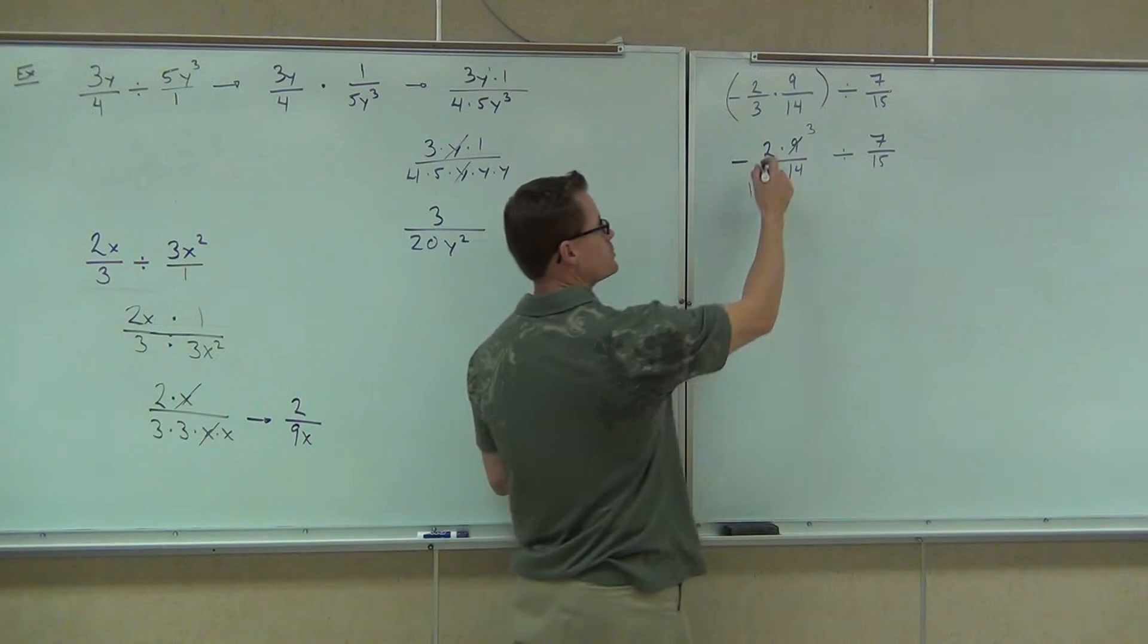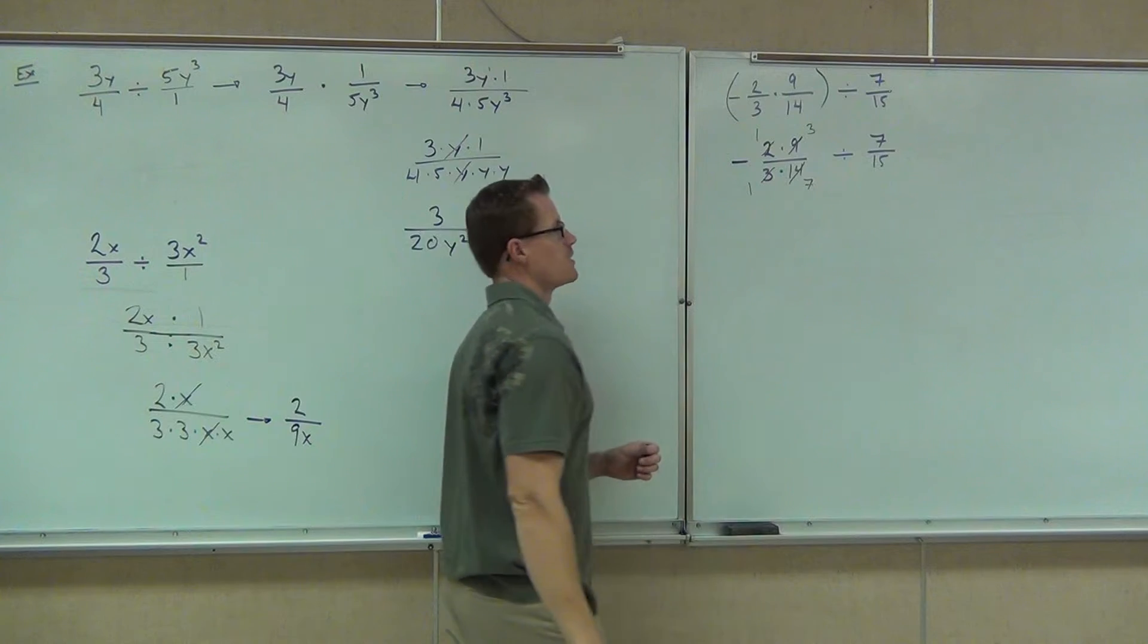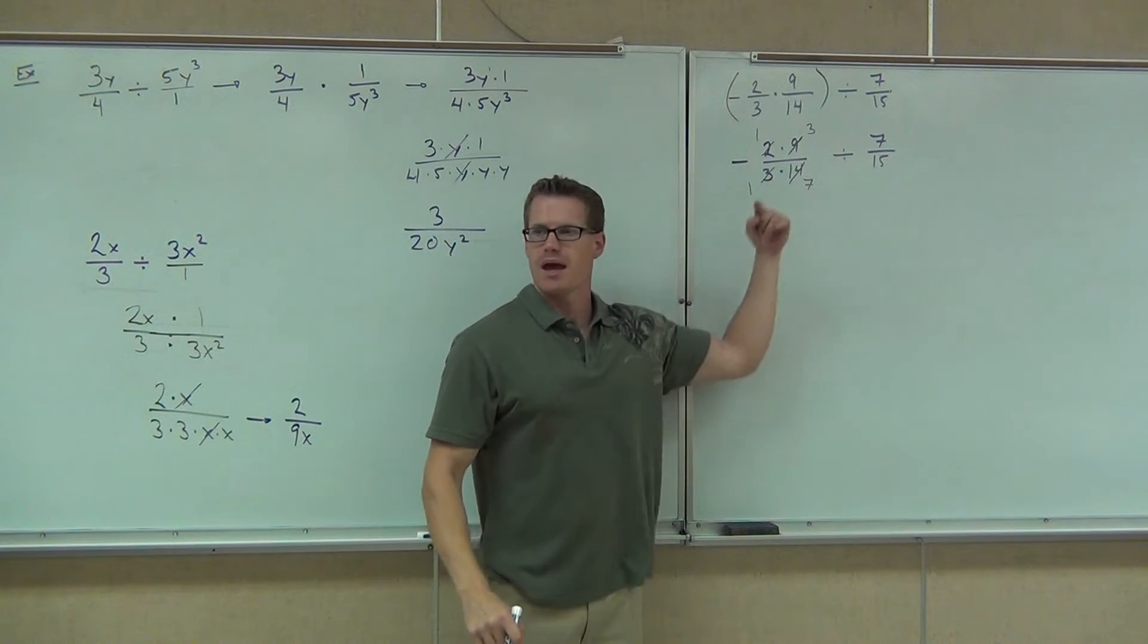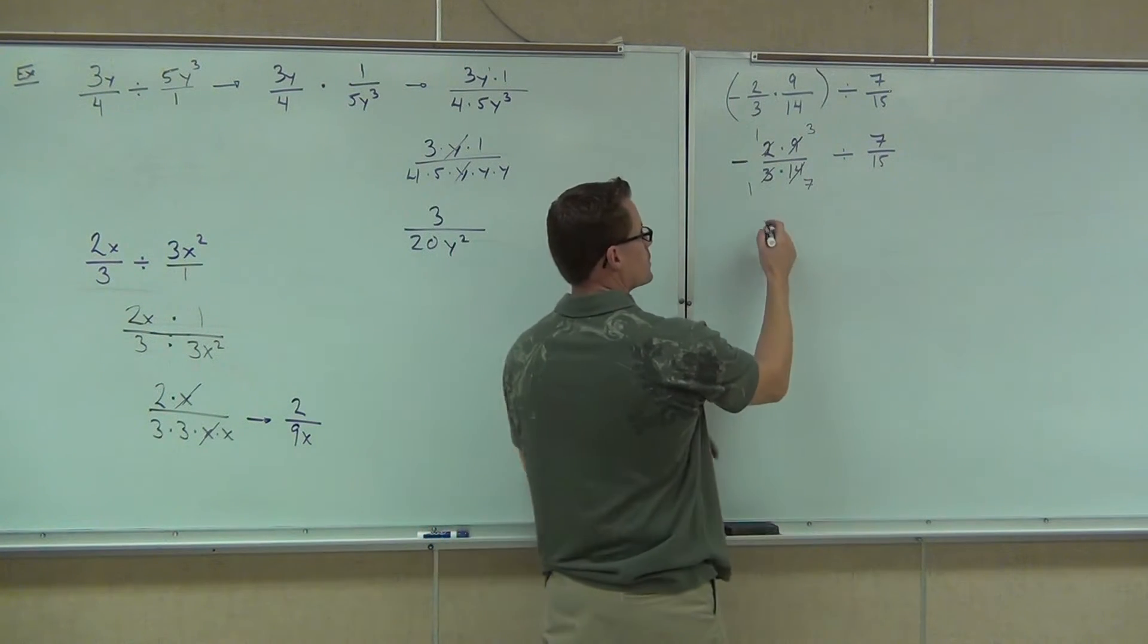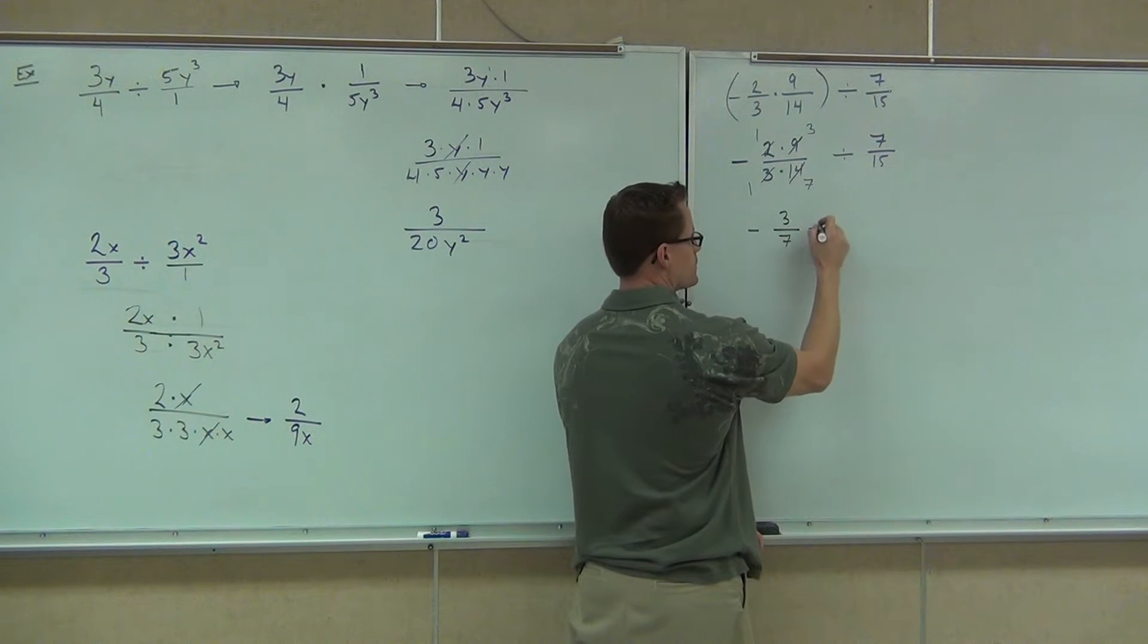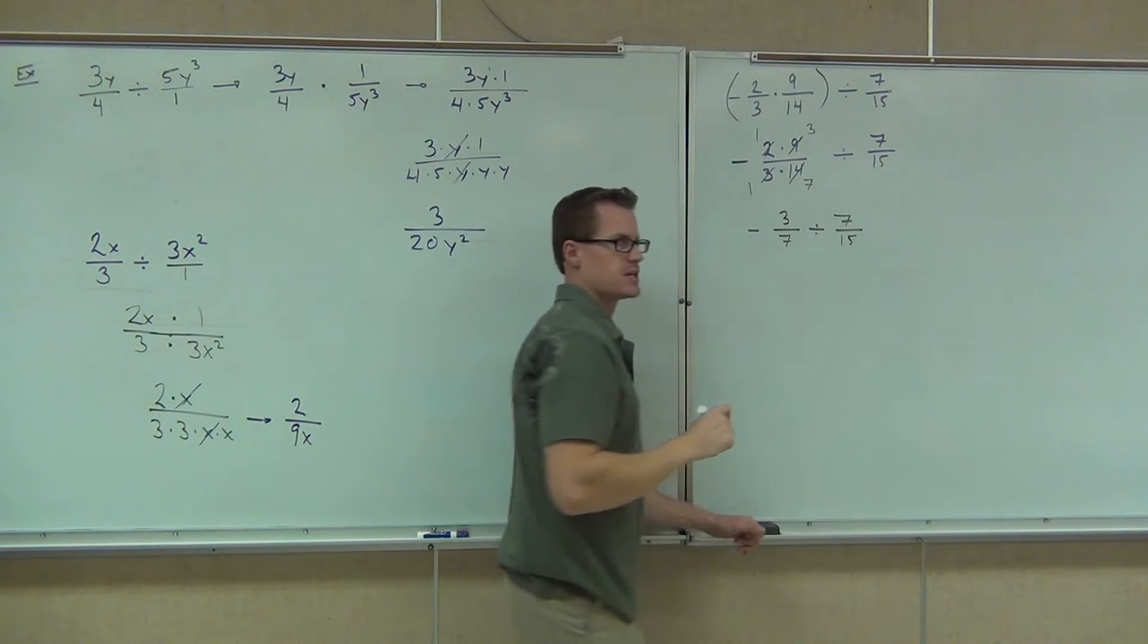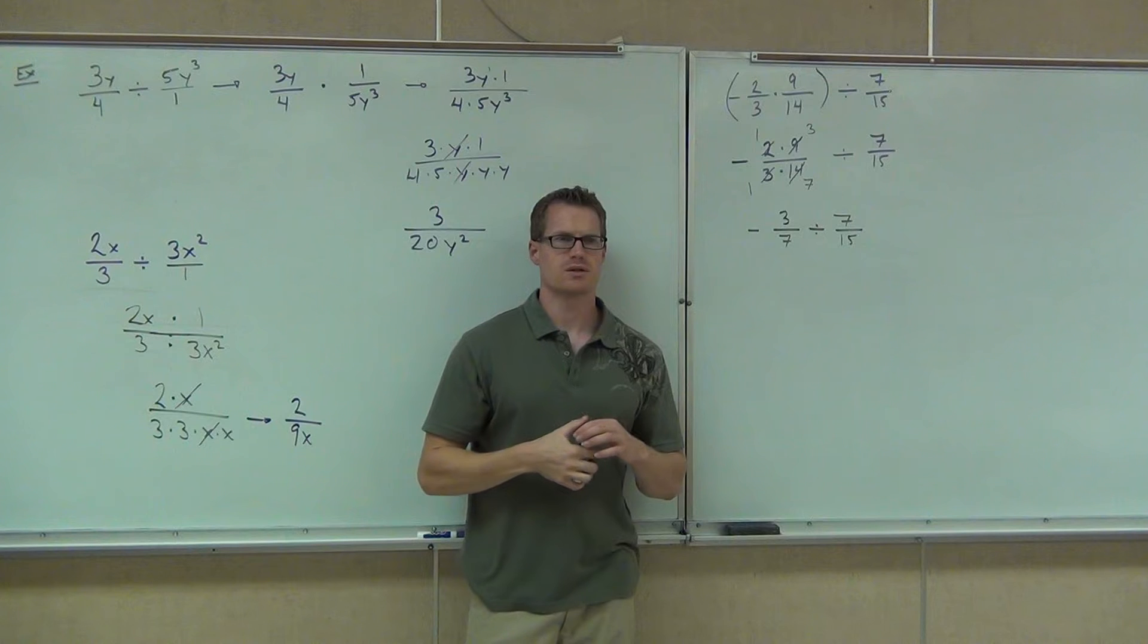And it's 2 and the 14th. Good. 2 goes into both those numbers. 2 goes into 2 one time. 2 goes into 14 seven times. Let's rewrite our fraction, and then let's divide by 7 15ths. I still have a negative divided by a 7 15ths. Okay, nod your head real quick if you're okay with this.